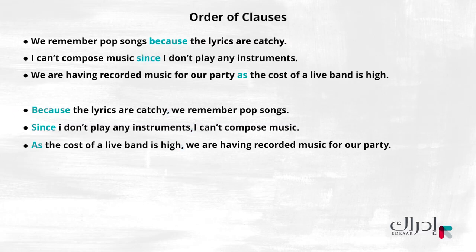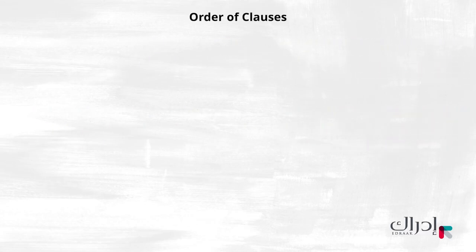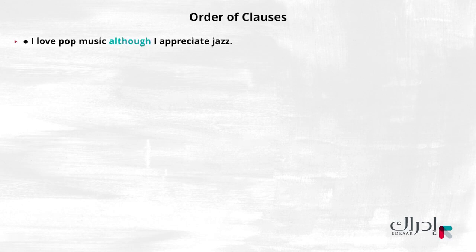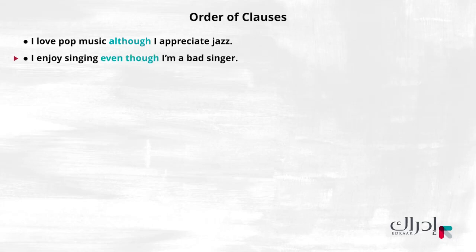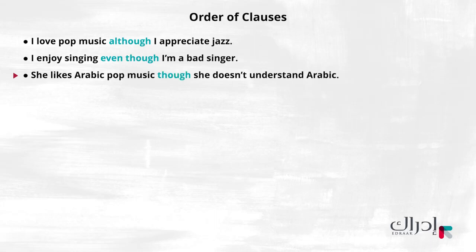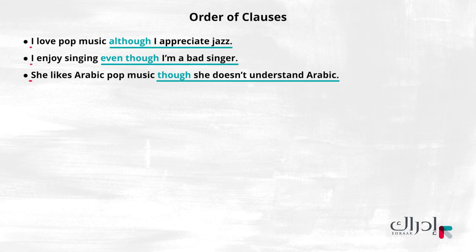Sentences with subordinating conjunctions of contrast follow the same pattern. Do you remember those sentences? Here they are. I love pop music, although I appreciate jazz. I enjoy singing, even though I'm a bad singer. She likes Arabic pop music, though she doesn't understand Arabic. In all three sentences, the dependent clause is second — it is after the independent clause.